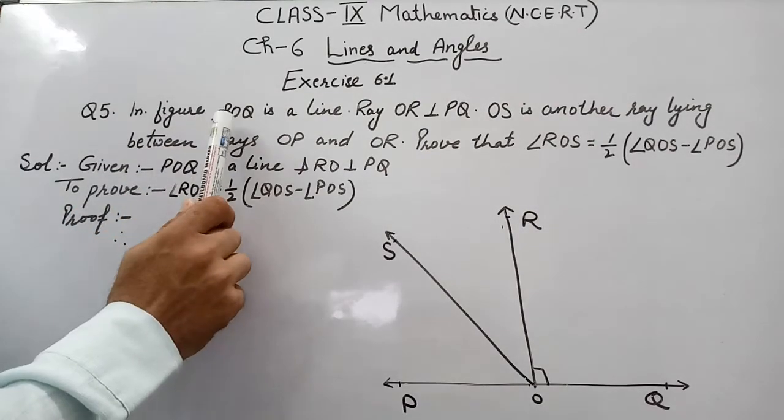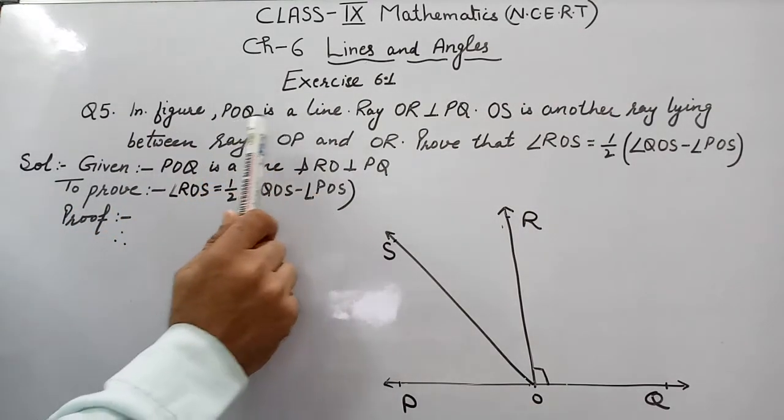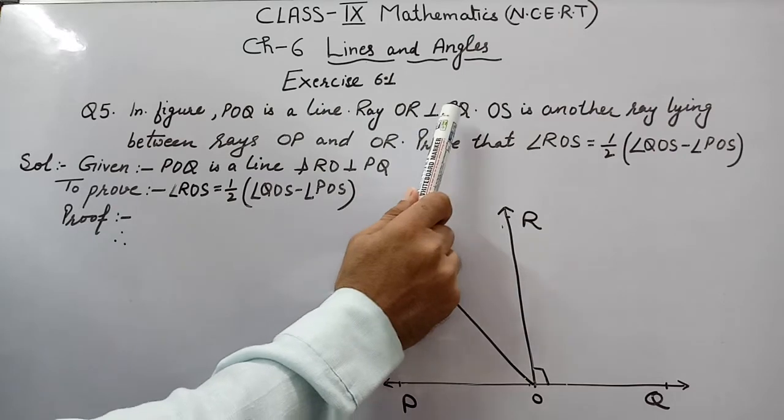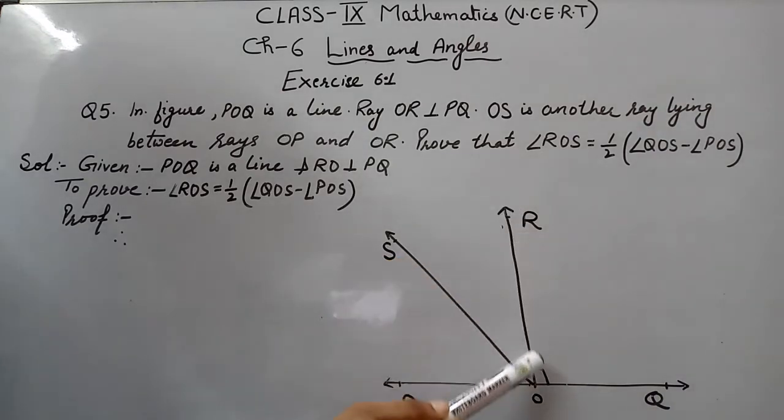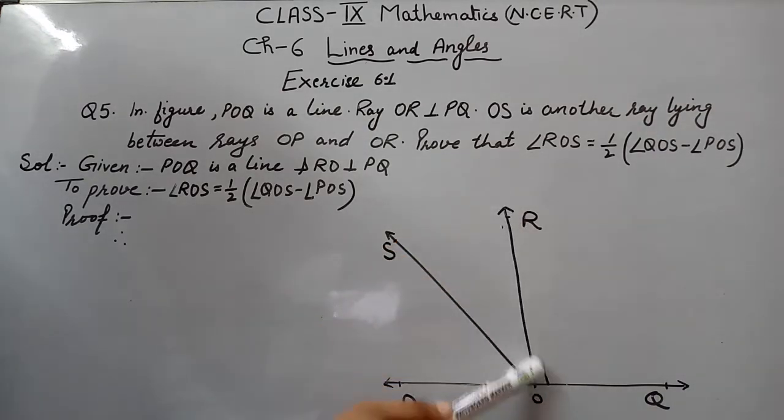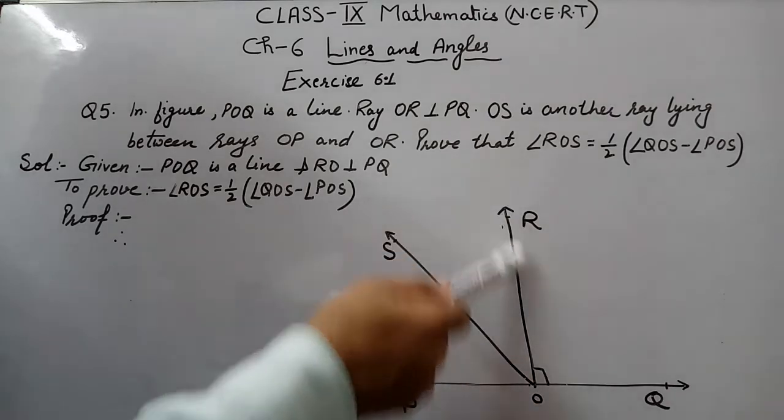In figure, POQ is a line, ray OR perpendicular to PQ. So let's see here, in the figure POQ is a line, it is a straight line, and OR is perpendicular to PQ.